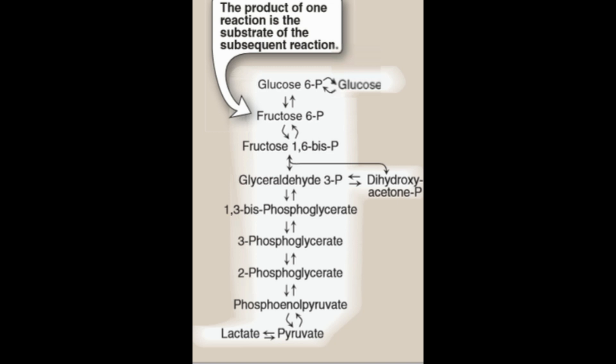Here's the mnemonic for the glycolysis reaction: 'Good Friends Get Mutual Presents Packaged.' The twos are there to remind you that Friends, Presents, and Packaged have repeated letters — two F's, two P's, and another two P's. Starting from glucose: Good = glucose 6-phosphate, first F = fructose 6-phosphate, second F = fructose 1,6-bisphosphate, Get = glyceraldehyde 3-phosphate, Beautiful = 1,3-bisphosphoglycerate, first P = 3-phosphoglycerate, second P = 2-phosphoglycerate, Packaged = phosphoenolpyruvate, and the last step = pyruvate.